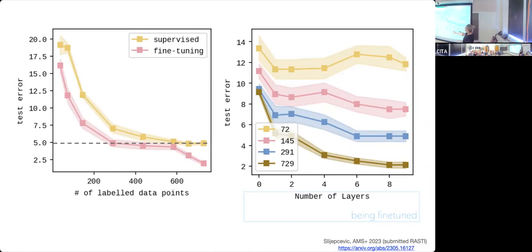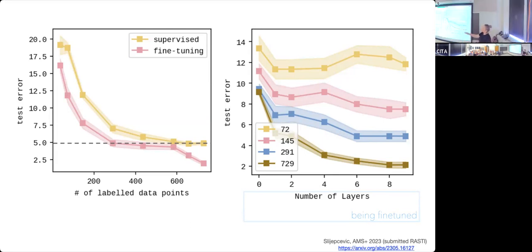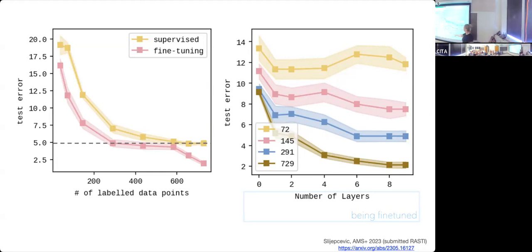The fine-tuned foundation model shows statistically better performance for the supervised task of FR1 versus FR2 classification. The pink line is the fine-tuned model, which is systematically lower in test error than the fully supervised model. On the right-hand side, this shows how fine-tuning depends on the number of layers being fine-tuned. Our model is built on a ResNet architecture and we fine-tune with a particular decay back through the layers. We found that including a decay — so layers deeper into the model are fine-tuned more slowly than layers at the end — is very important for getting good fine-tuned performance from the foundation model.